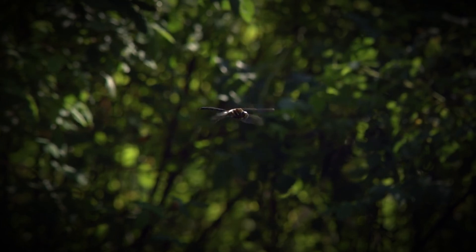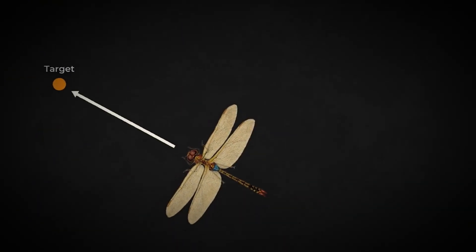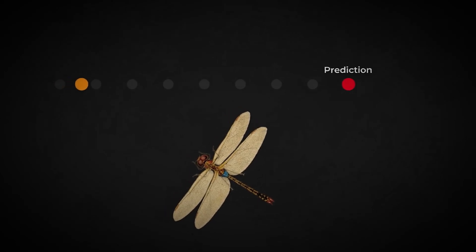In fact, they have some seriously advanced hunting skills. They're able to predict where their prey will be, and they even calculate the speed and trajectory of their prey to intercept them mid-flight. It's like they're doing calculus in their little insect brains.